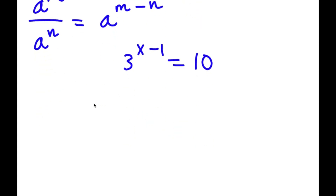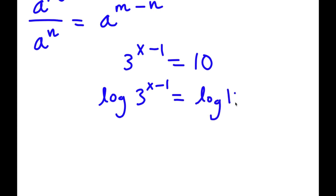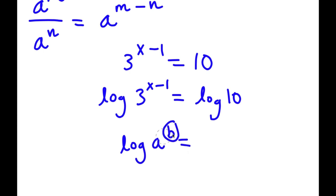So now to solve this, I'm going to take the log on both sides. So now I have log 3 to the power of x minus 1 is equal to log 10. An important property of logarithms is that if I have something in the form log a to the power of b, I can move this exponent b to the front of the logarithm, so this equals b times log a.